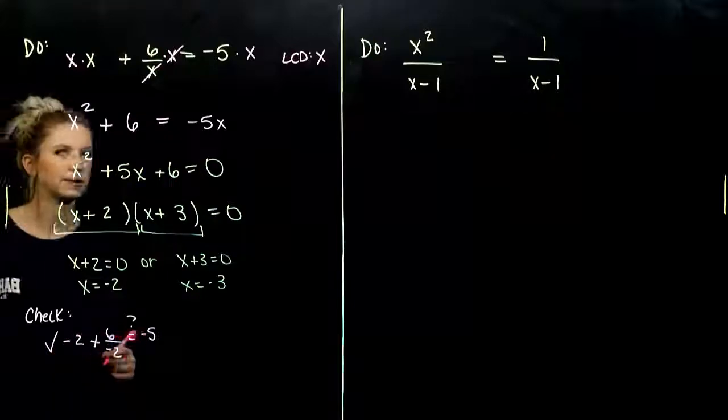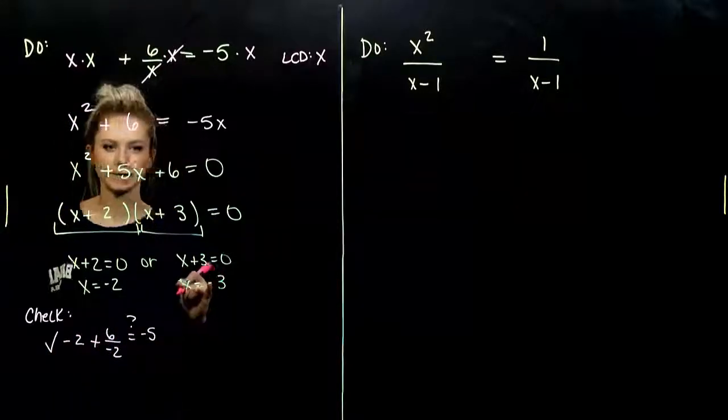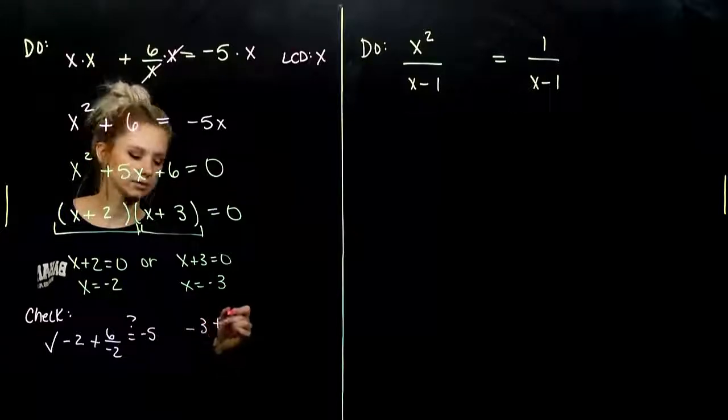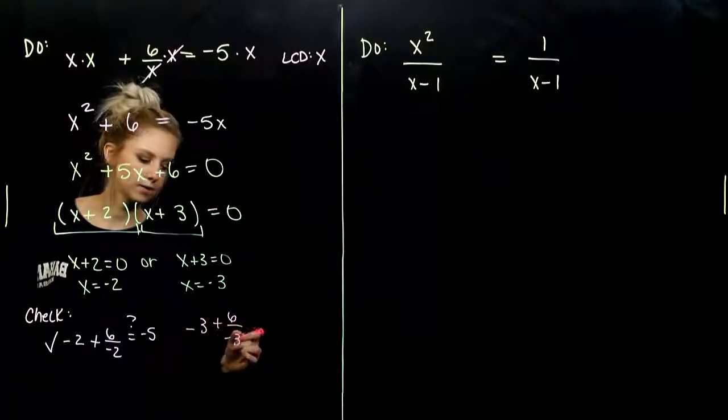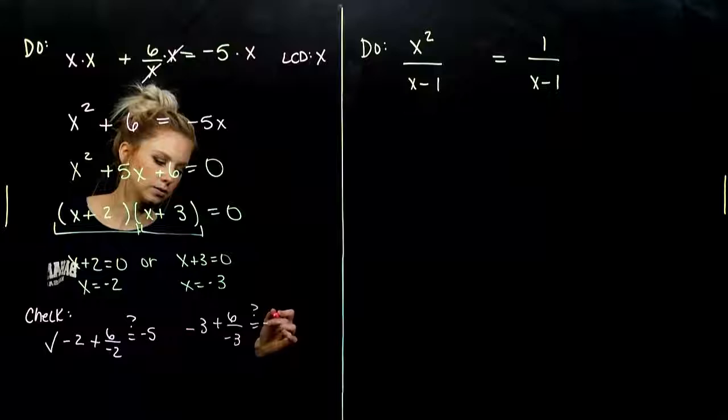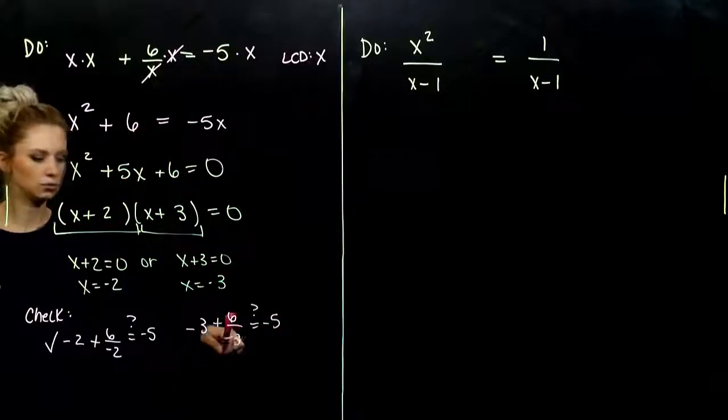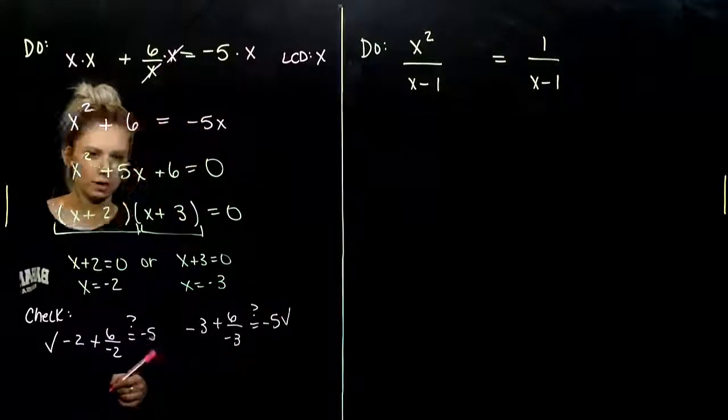That one's verified. And the second, when we plug that one in. Negative three plus six divided by negative three. Is that really equal to negative five? Negative three minus two. Yes, that one is true as well.